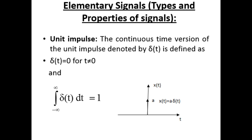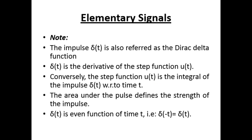Next, we are going to study about elementary signals — their types and properties. The continuous time version of the unit impulse is denoted by δ(t), defined as δ(t) = 0 for t ≠ 0, and the integral from −∞ to +∞ of δ(t) dt = 1. The graph for the unit impulse function is denoted x(t) = A·δ(t).